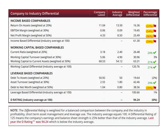If the company value is more than 10% below the industry average, it is noted with a red flag. If it is more than 10% above the industry, it has a green checkmark, and if the value is within 10% of the industry average, the differential is listed in black.